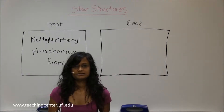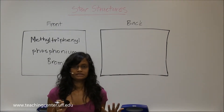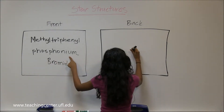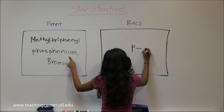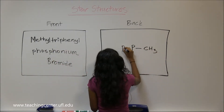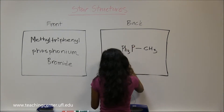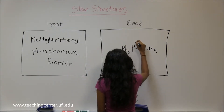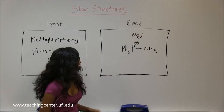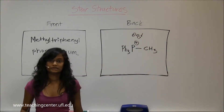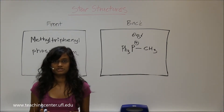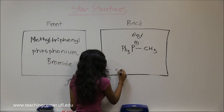The next reagent is used in chapter 15 — it has a phosphorus with a methyl on one side and a triphenyl group on the other side. It's an ion with bromide as the counter ion. This is a great nucleophile that will be used in a reaction in chapter 15.